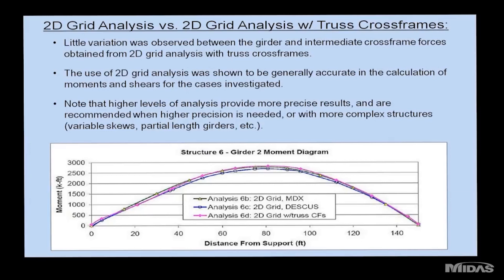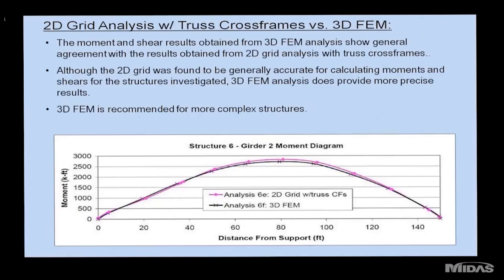The intent is not to dissuade designers from using higher levels of analysis — those are recommended for more complex structures with variable skews or partial-length girders. ODOT's goal was to set a minimum required analysis level. For simple structures there is little difference between 2D and 3D calculated moments and shears, but 3D analysis is required to accurately calculate lateral bending and warping stresses in girder flanges, which can be significant in heavily skewed structures.